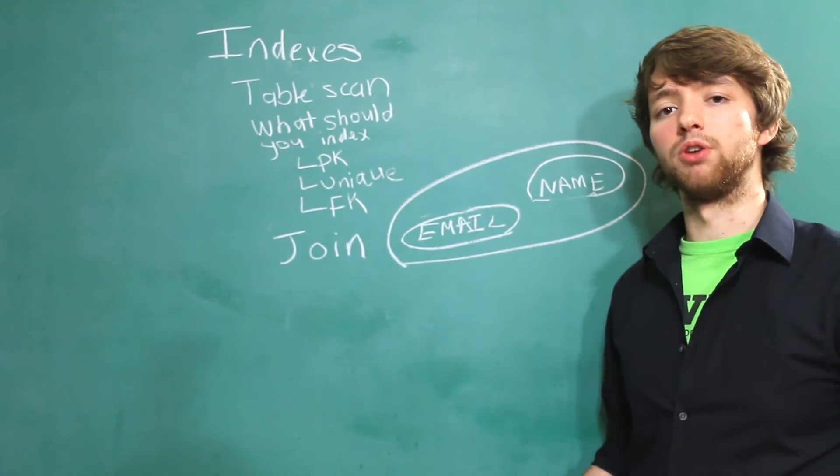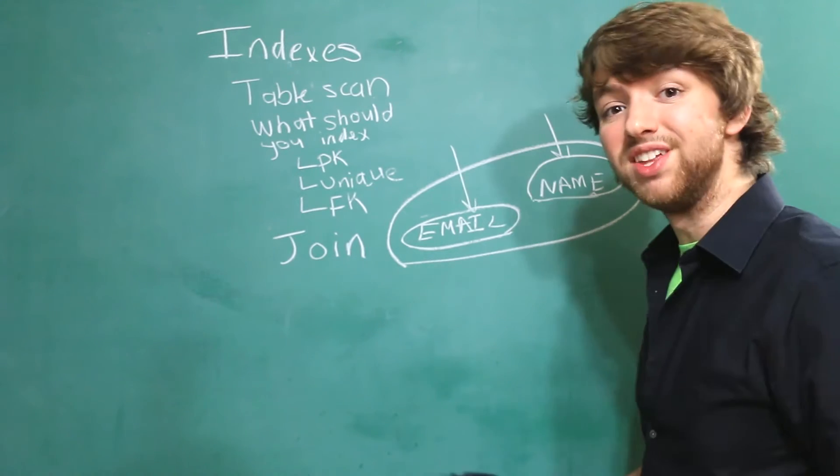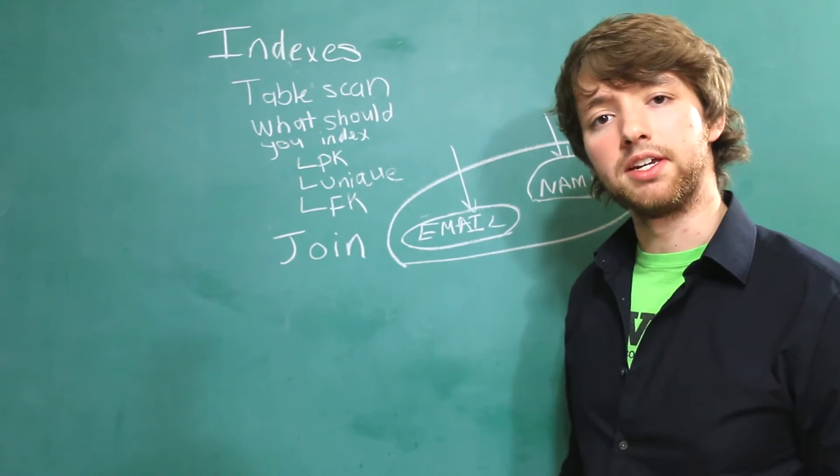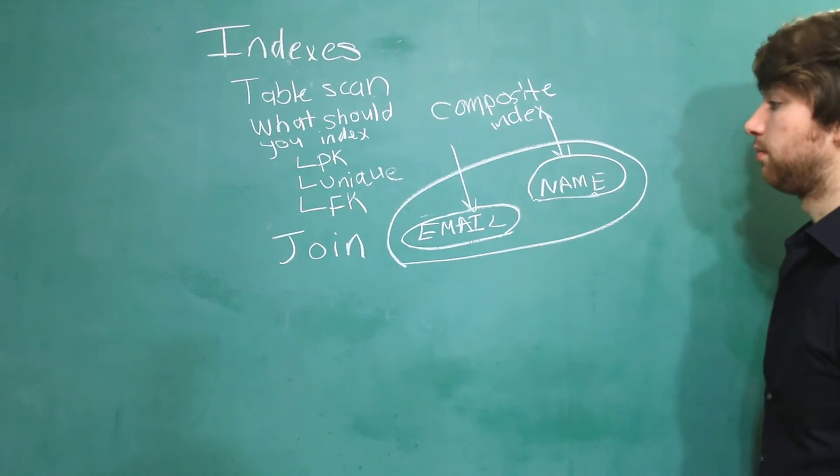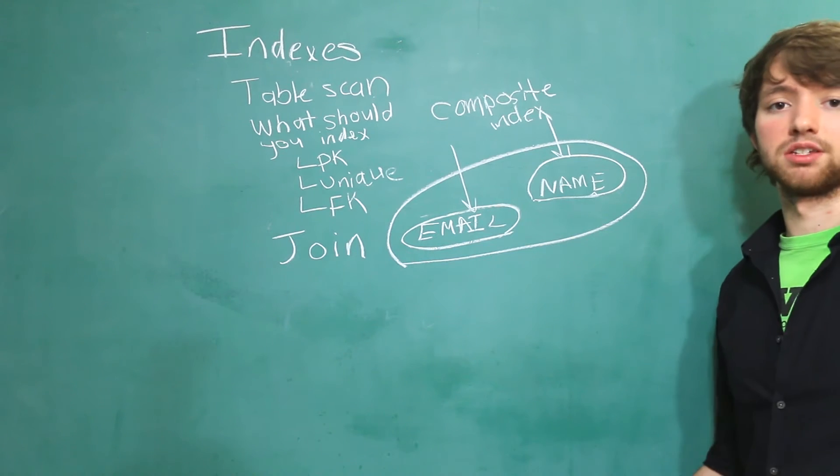Well, we can actually index these as a group and index this entire thing. And this is going to make the query run at the optimum speed. This, my friend, is known as a composite index. These are going to be very important when you're making your queries because you're going to want your queries to be as fast as possible.